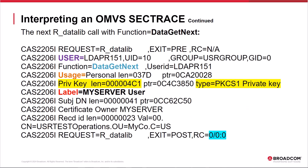Here are the next R_datalib trace entries associated with FUNCTION=DATA GET NEXT, requesting the next certificate. The last CES2205I post-trace R_datalib call with zero return codes indicates that another certificate was returned successfully. Note that in this case the certificate being returned is the personal server certificate, with its private key length and type as shown highlighted in yellow. If the private key information is not in the trace entry for a personal certificate, that would indicate one of two problems: one, the certificate does not contain a private key; or two, the certificate does contain a private key but the user does not have access to the private key based on an ESM resource validation. In this case the trace entries show that the private key was successfully returned.